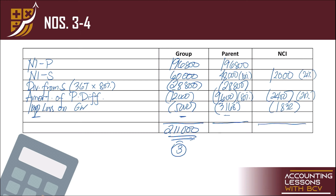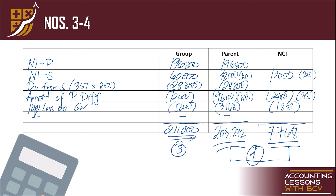Answer number 4: consolidated net income attributable to the parent = 203,232; non-controlling interest = 7,768. Make sure na pag pinag-add nyo yung consolidated net income ni parent at NCI, equal yan sa 211,000.